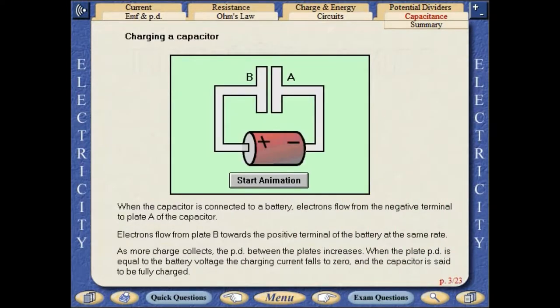When the capacitor is connected to a battery, electrons flow from the negative terminal to plate A of the capacitor. Electrons flow from plate B towards the positive terminal of the battery at the same rate.